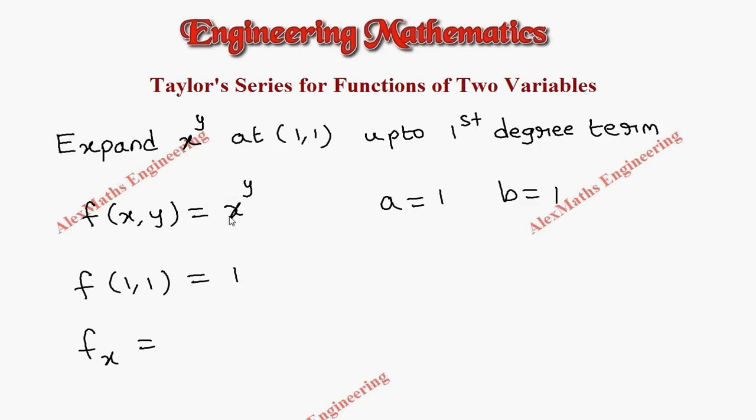partial differentiation of this function with respect to x. So y is constant. Since y is constant, y x^(y-1) will come, like x^n formula: n x^(n-1). Now fx at (1,1) will be, I put 1 here, it is 1, then 1^0 is 1, so totally it is 1.